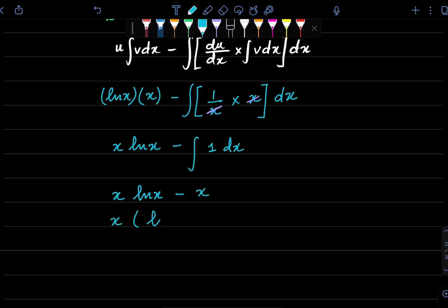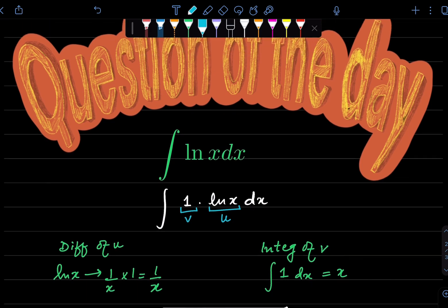Take x common and this is ln x minus 1. And you can add plus c if you're not applying limits. So this is the final integral of ln x.